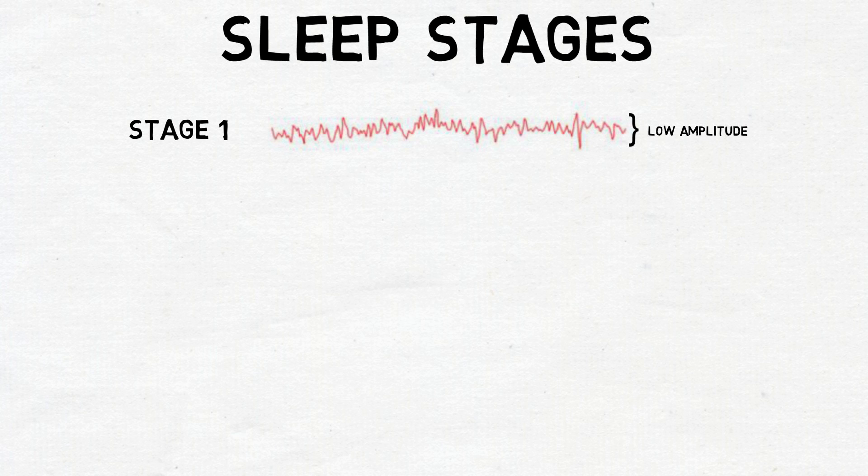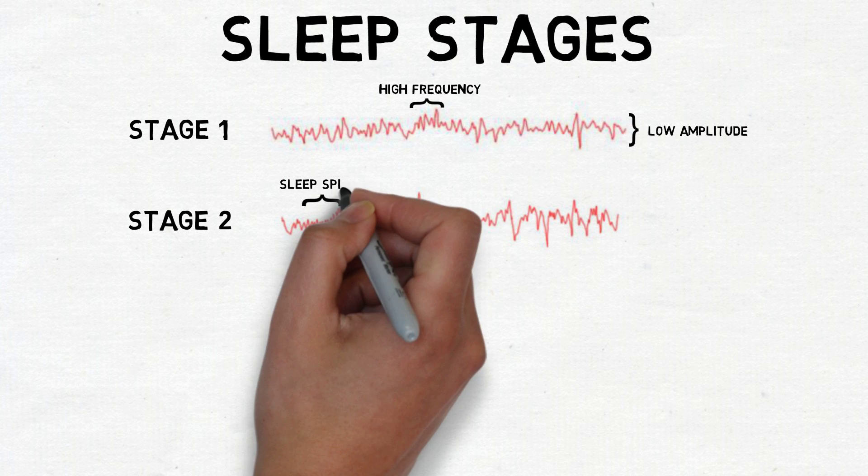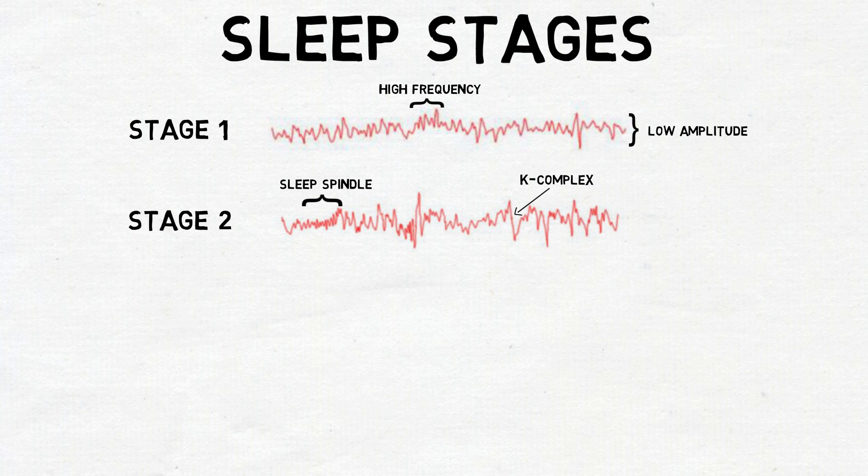Next, the person enters stage 2 sleep. This is characterized by the presence of phenomena on an EEG known as sleep spindles and K-complexes. Sleep spindles are trains of high-frequency waves. The K-complex involves a biphasic wave that stands out from the rest of the EEG.